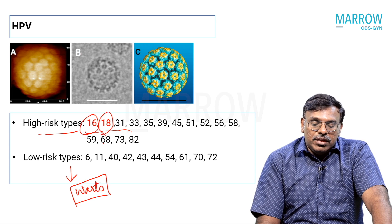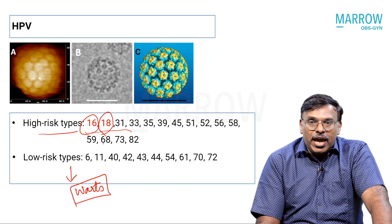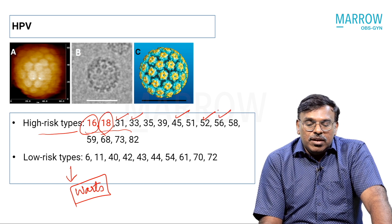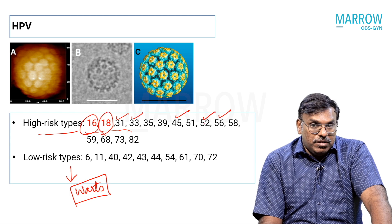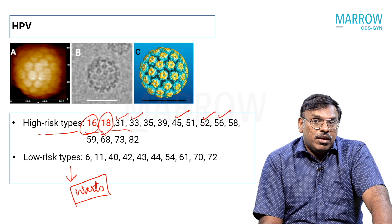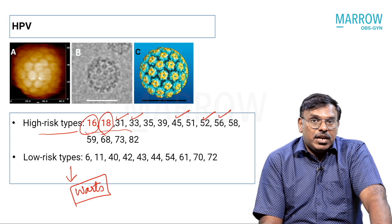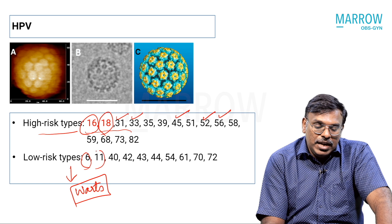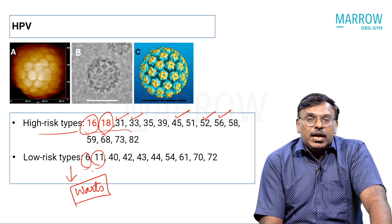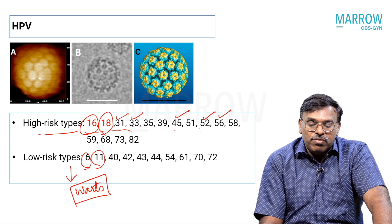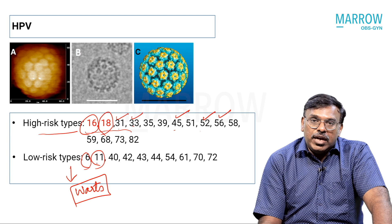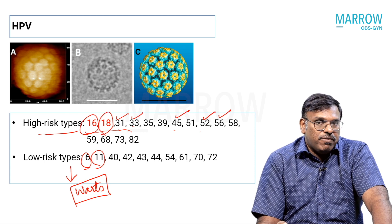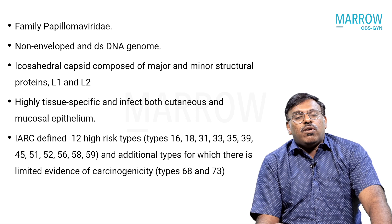Along with HPV 16 and 18, the other high-risk numbers you should be aware of are 31, 33, 45, 52, and 56 — these are the HPV types tackled by the vaccines, especially the nine-valent vaccine. The nine strains include two low-risk types — 6 and 11, the most common low-risk varieties — and seven high-risk variants: 16, 18, 31, 33, 45, 52, and 56. So seven plus two equals nine — these are the HPV types against which the nine-valent HPV vaccine acts.